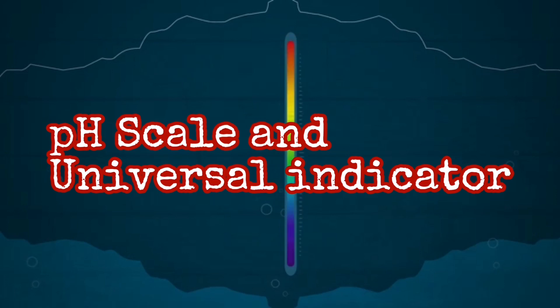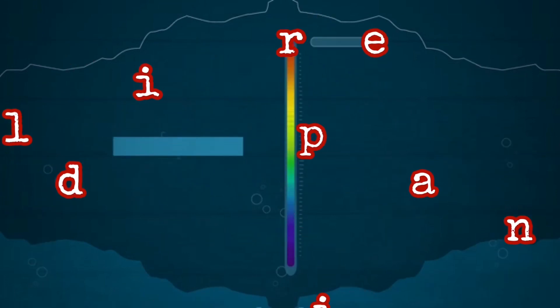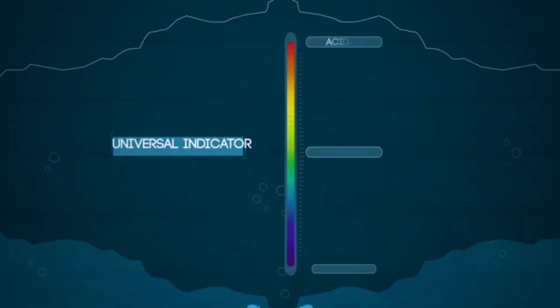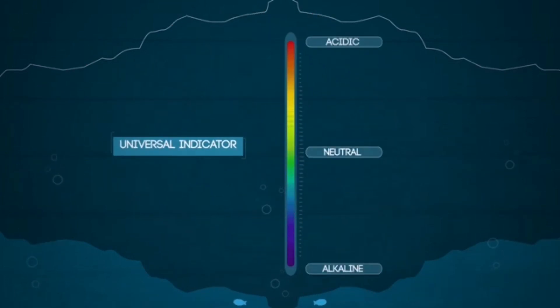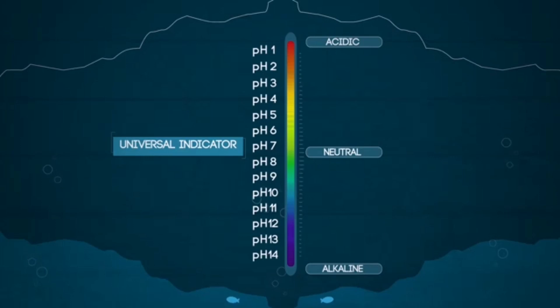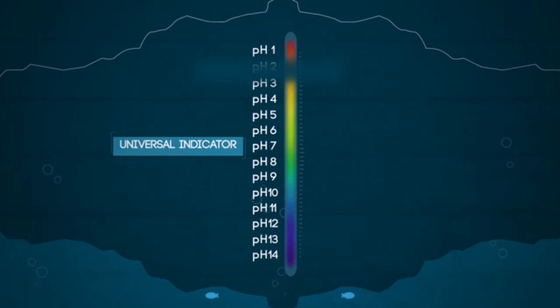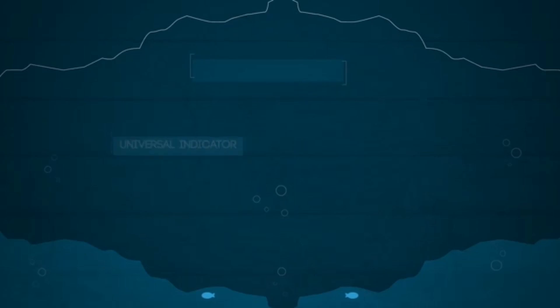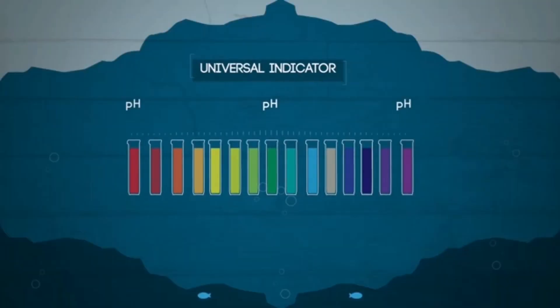Universal indicator is a mixture of different indicators or dyes which has many different color changes, and so shows us the pH value of a solution. Again, it can be used as a liquid or paper.